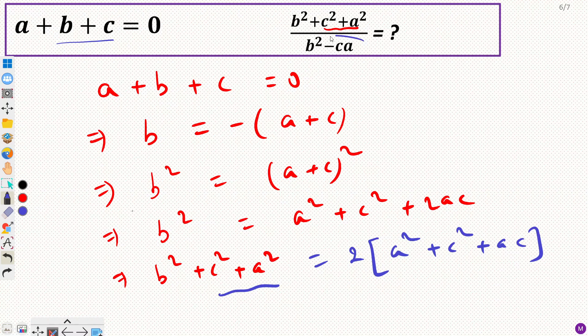Now for the denominator we want b squared minus ca. So if I subtract ca from this equation, then we would get b squared minus ac equals a squared plus c squared, and this 2ac we can subtract 1ac so that would become 1ac.